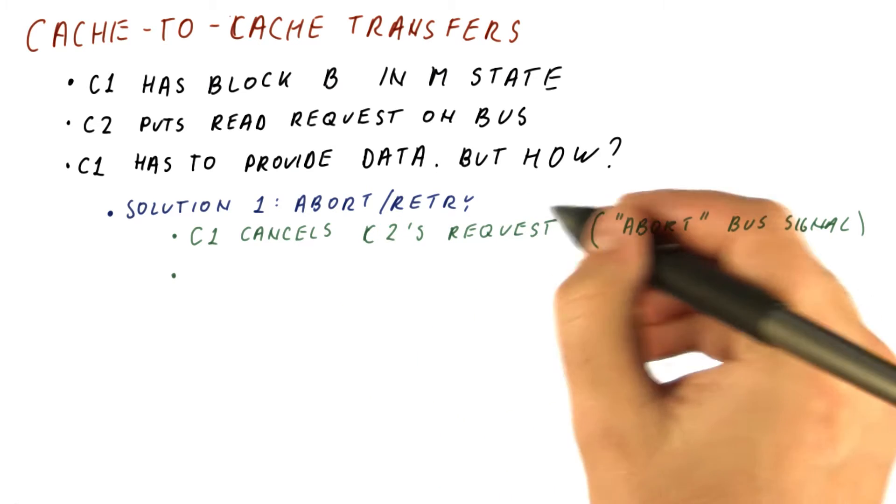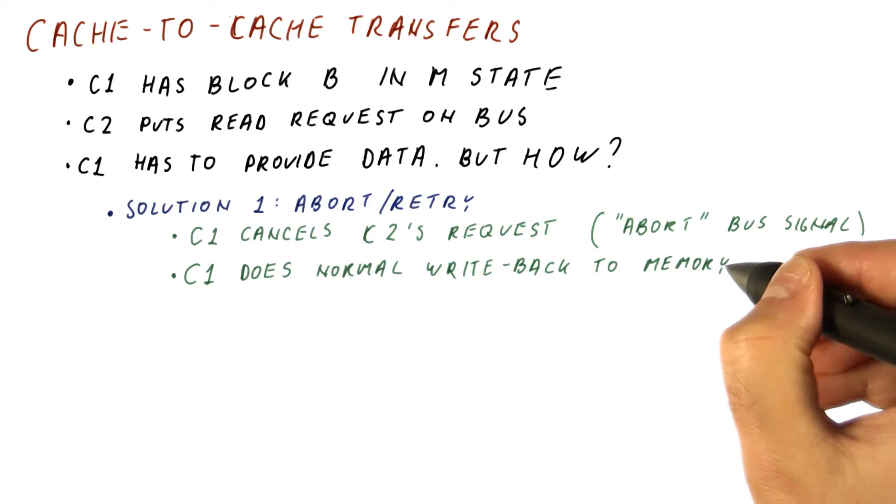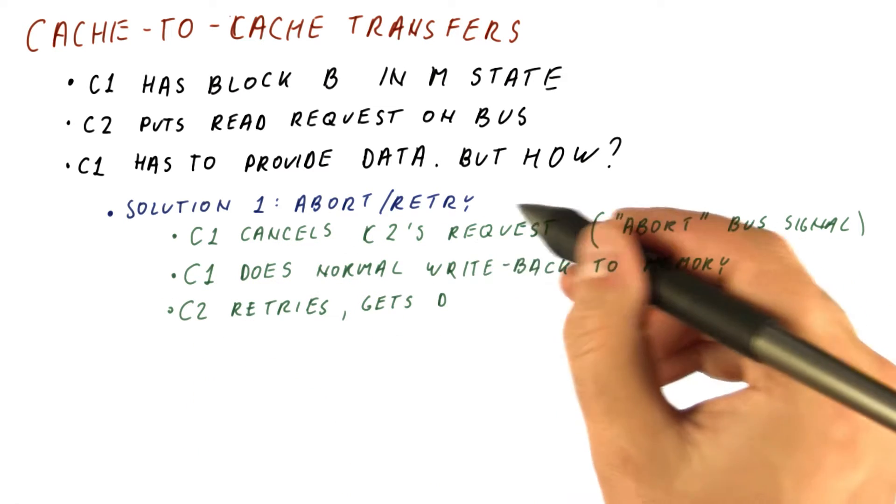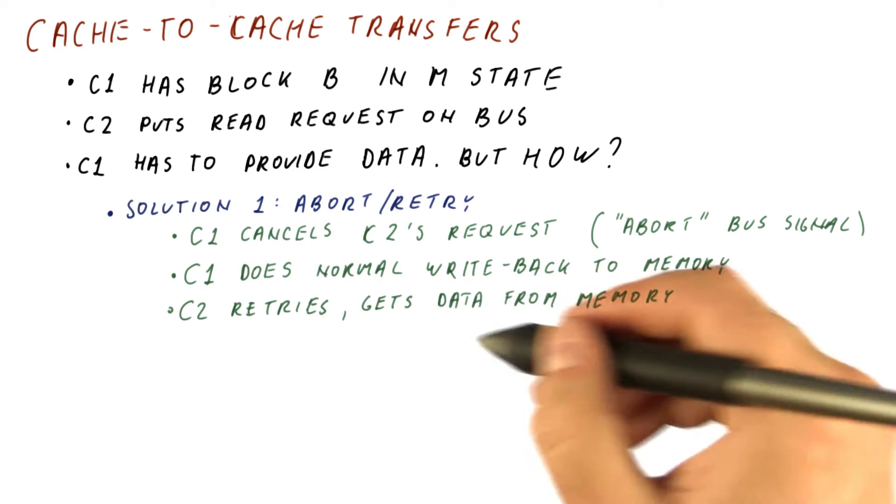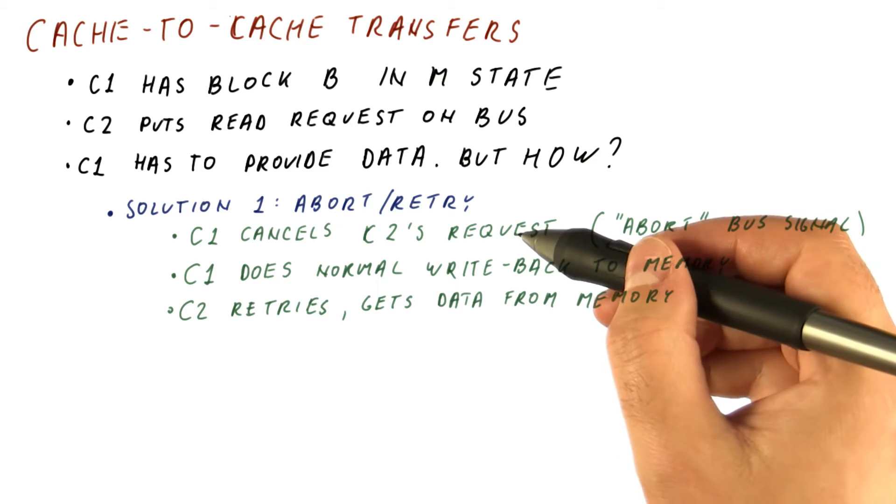Now that C2's request has been aborted, C1 can do a normal write-back to memory. At this point, the memory has the up-to-date data, and when C2 retries its read request, it will get the data from memory.